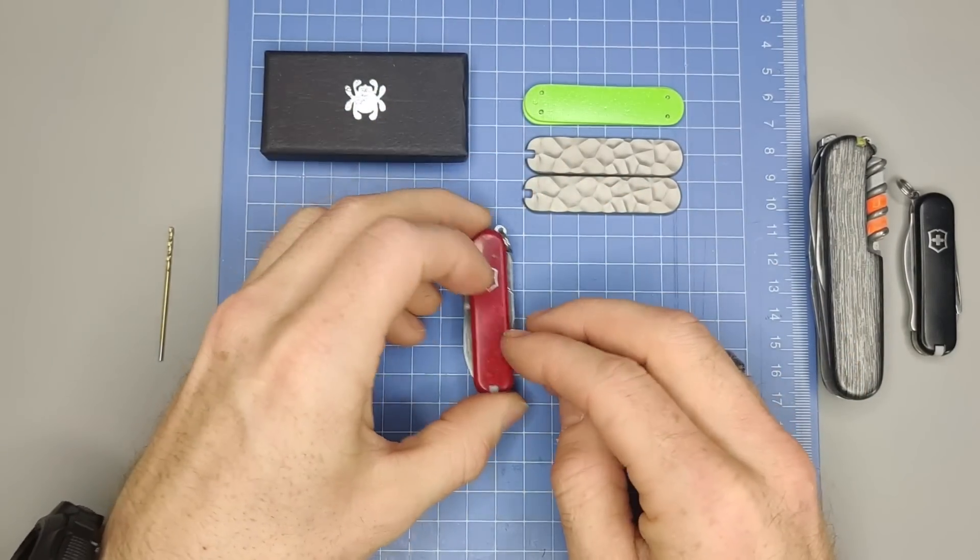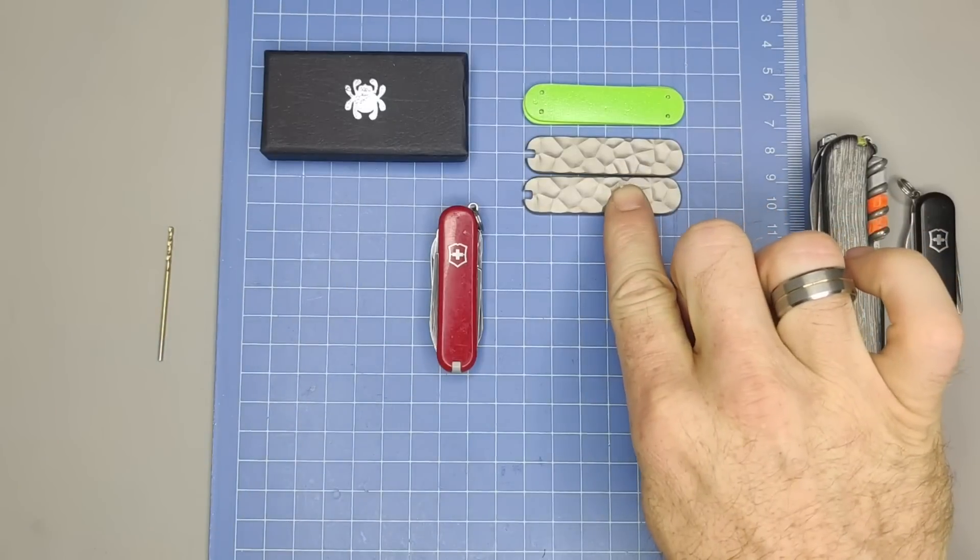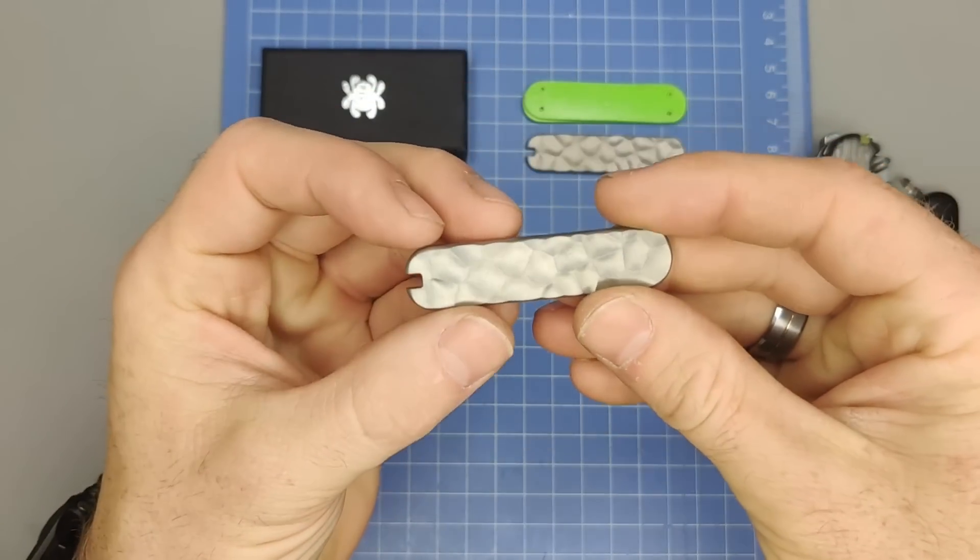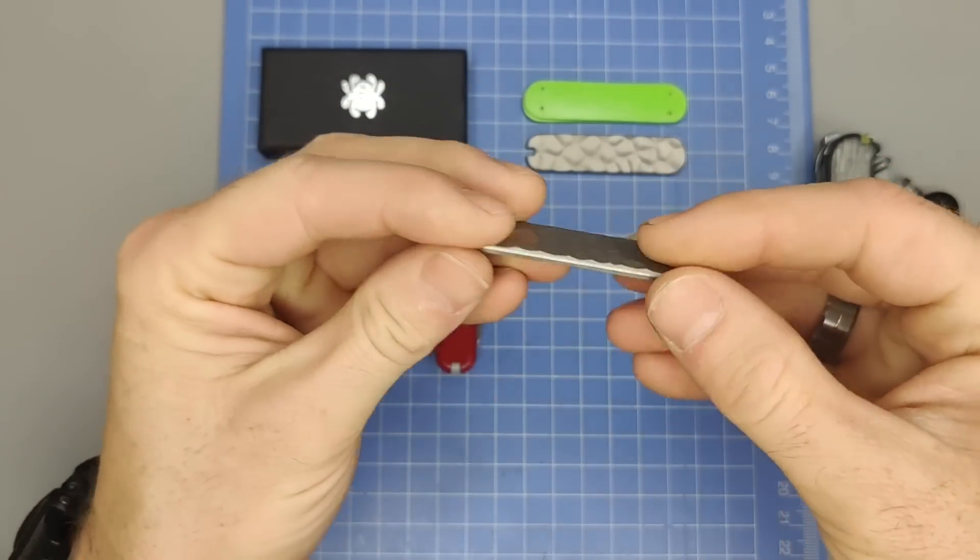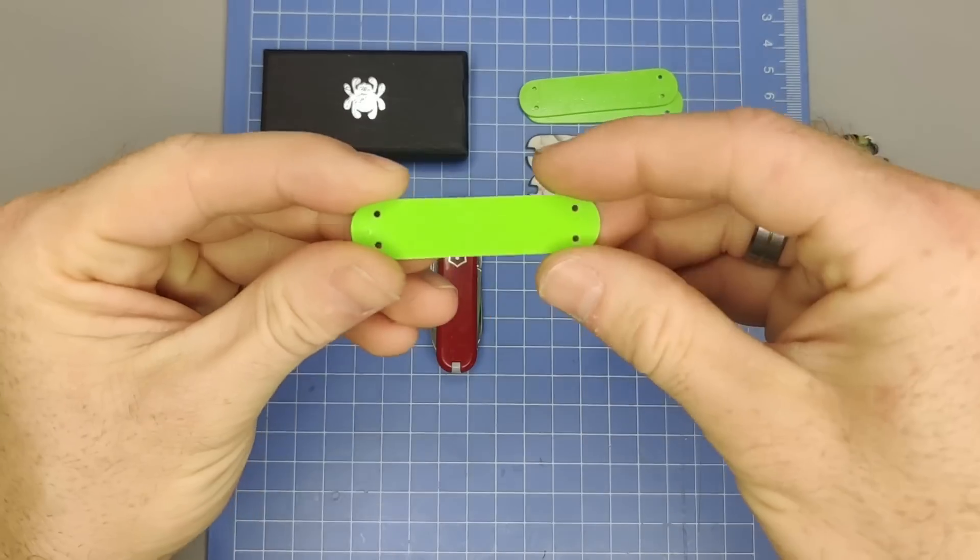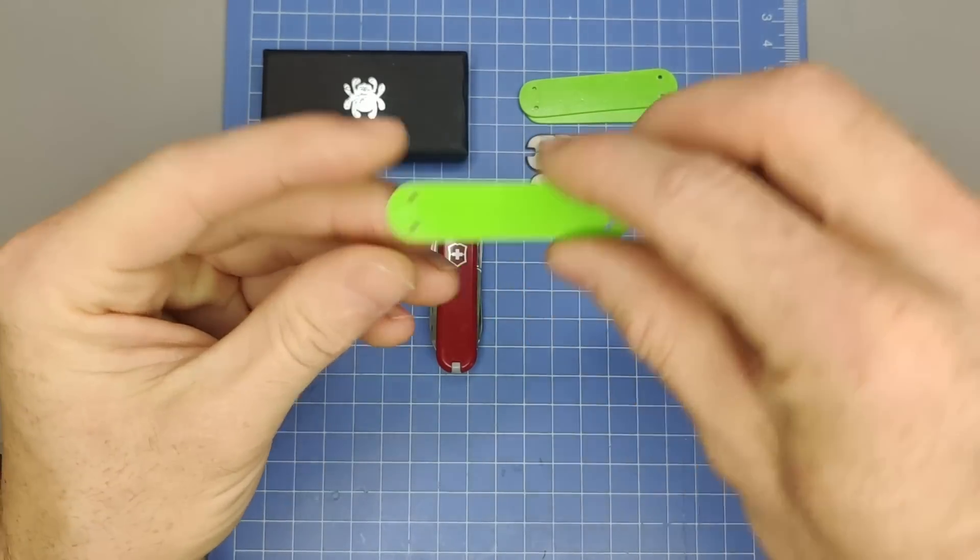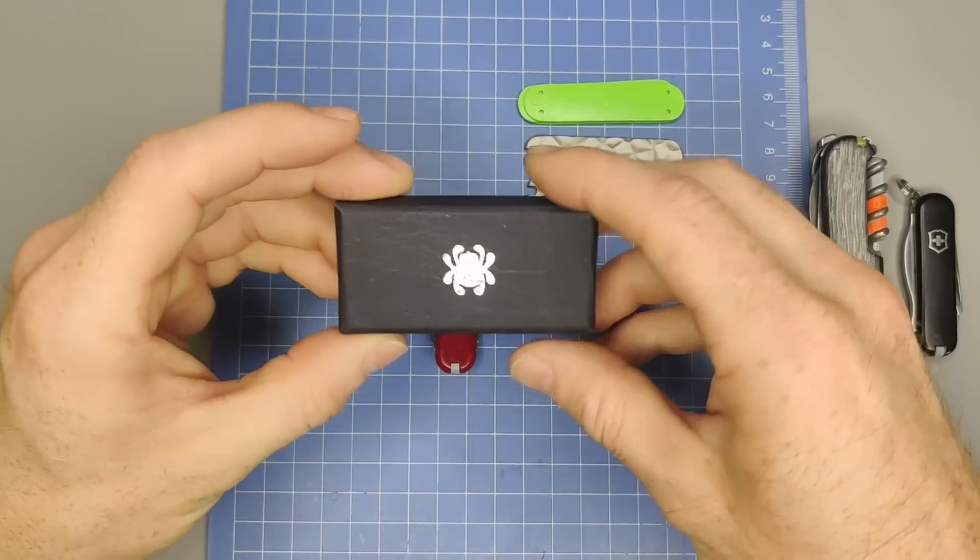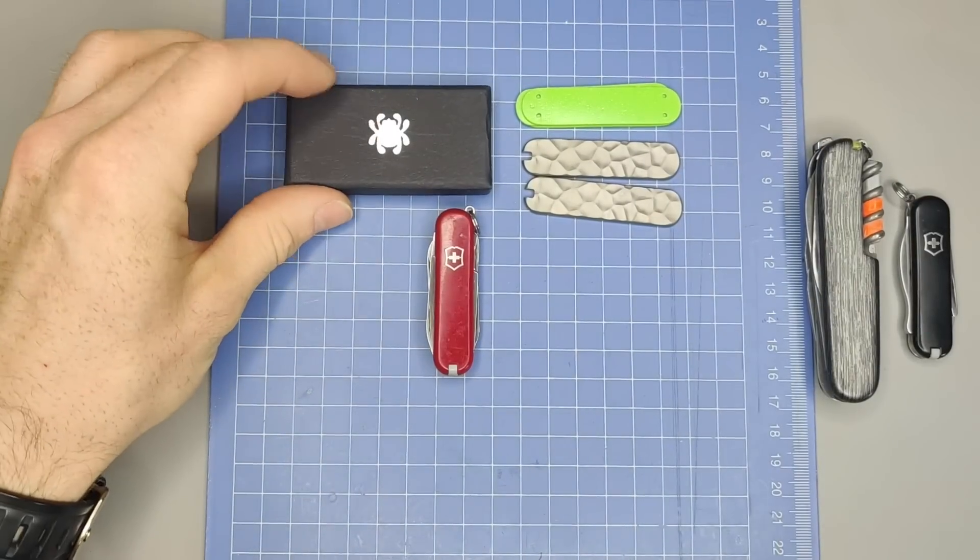Alright, so this particular build, we're going to be using Mini Champ. And as you see here, we have these titanium scales we're going to be using. They're like this rock pattern. And we're going to be using these neon green G10 liners that I already had made. And also we're going to be using the Spyderco Honeybee.